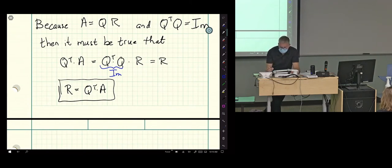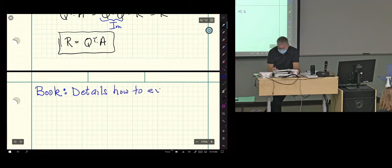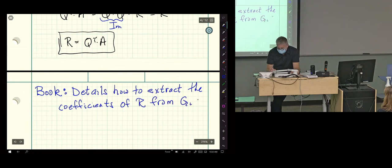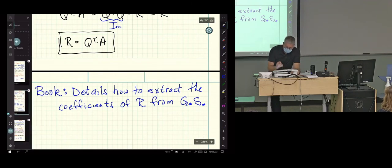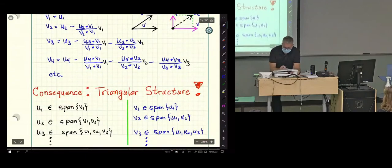So that's a very inefficient way to get R, but it's a really quick way to get R if you're just in Julia. If we go to the book, it details how to extract the coefficients of R directly from Gram Schmidt when you're doing it.